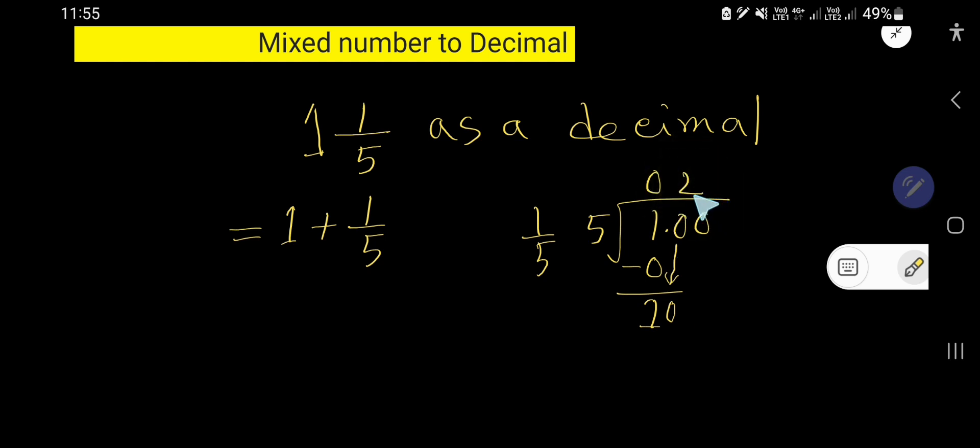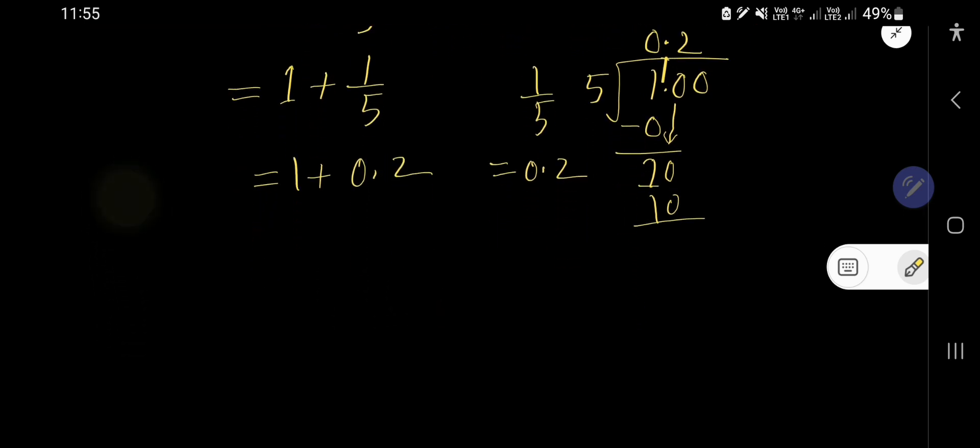So five goes into ten two times, two times five is ten. So one over five means 0.2. So one plus 0.2.